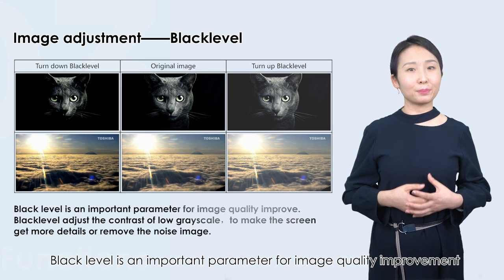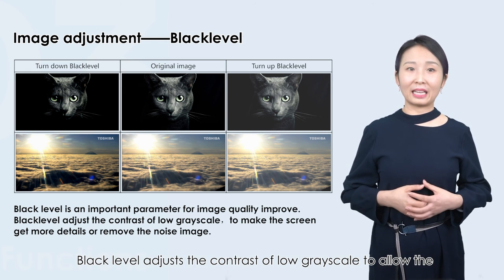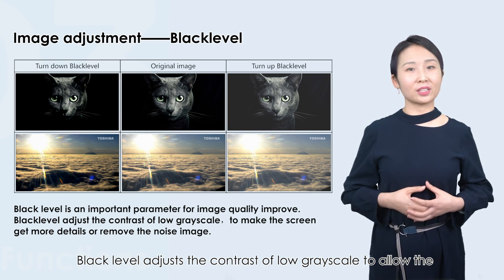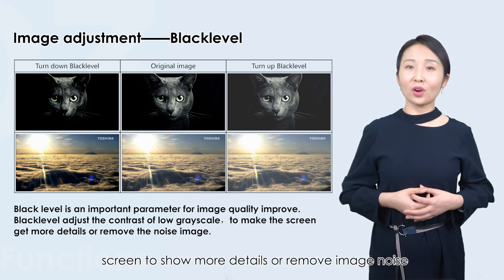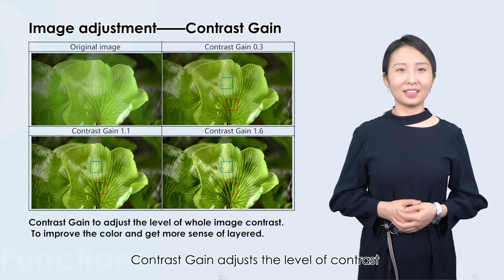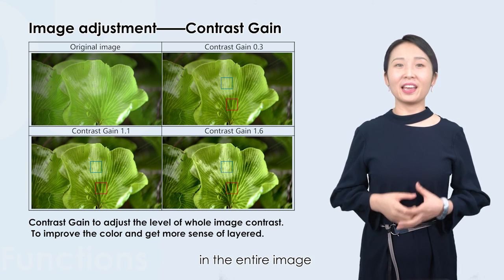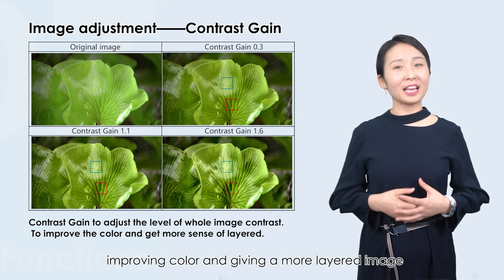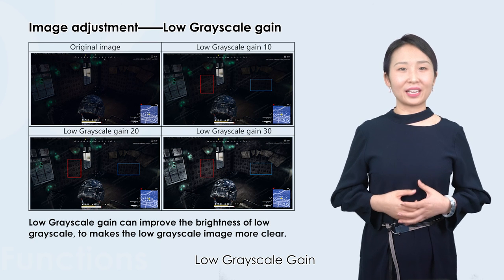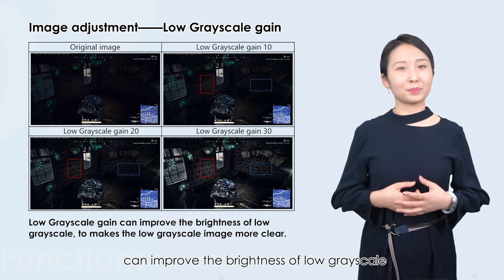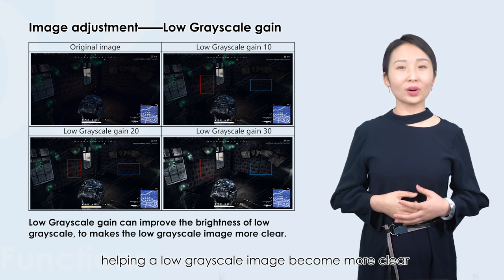Black level is an important parameter for image quality improvement. Black level adjusts the contrast of low grayscale to allow the screen to show more details or remove image noise. Contrast gain adjusts the level of contrast in the entire image, improving color and giving a more layered image.